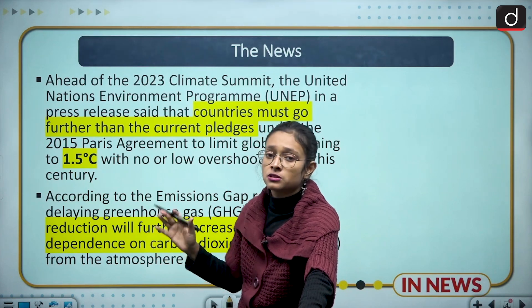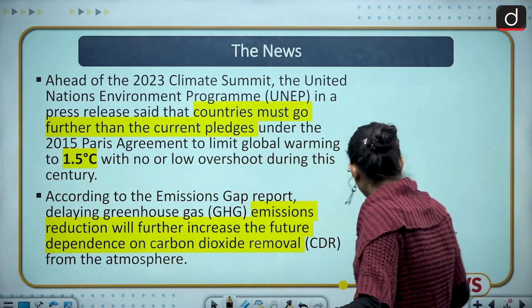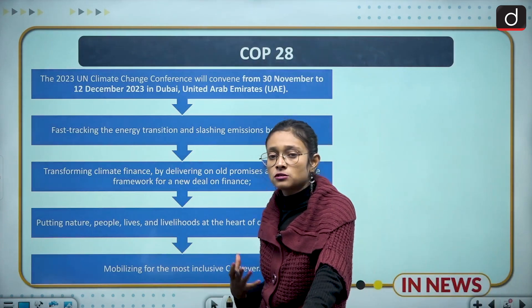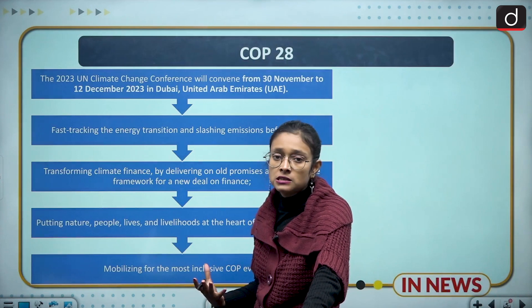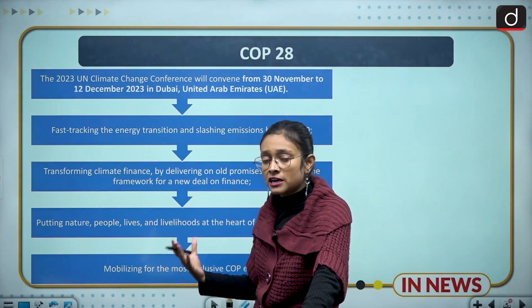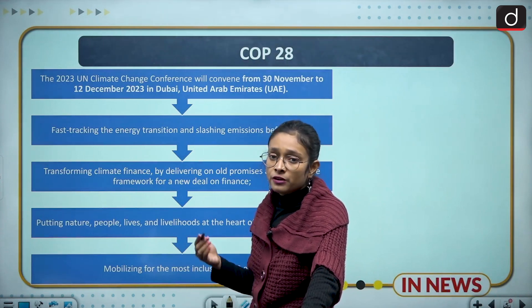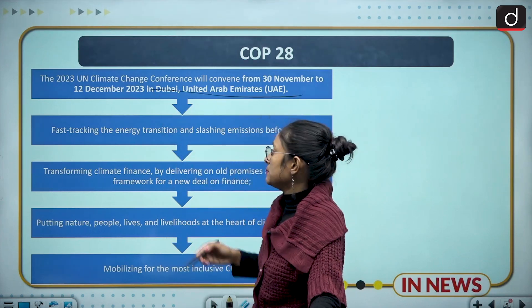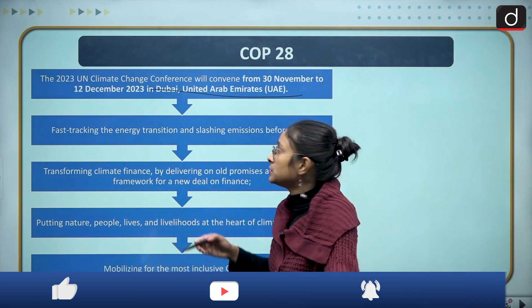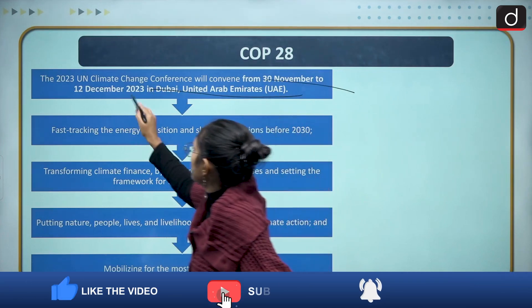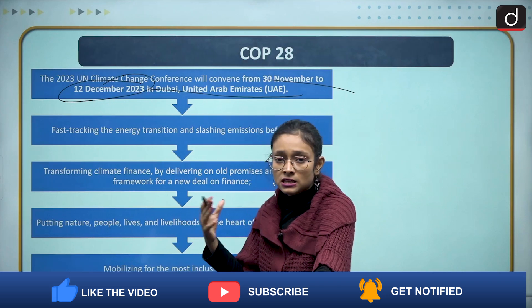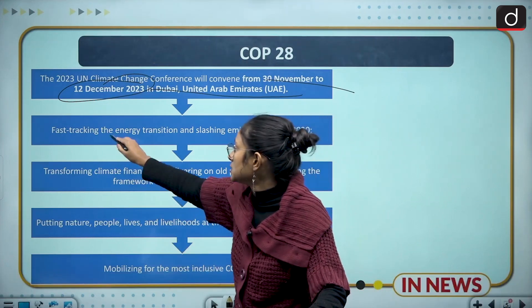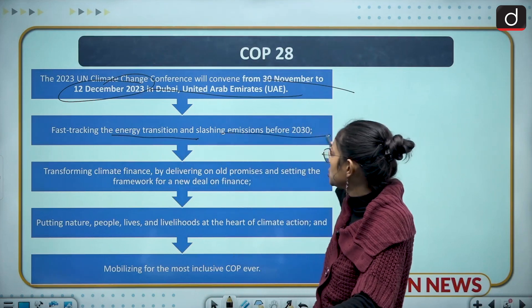Moving to COP 28: this is the 28th edition of the Conference of Parties. It is going to be held in Dubai, United Arab Emirates, between 30th November and 12th December 2023. The first main agenda is fast-tracking the energy transition and slashing emissions before 2030.